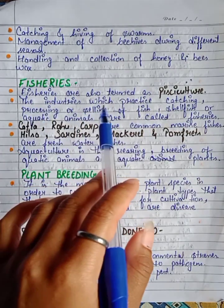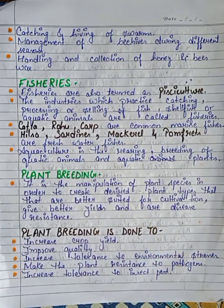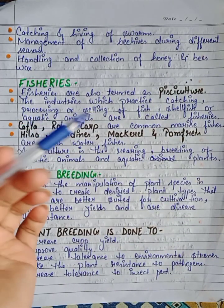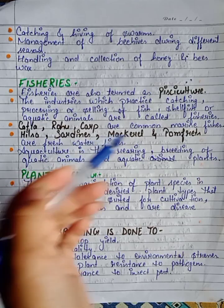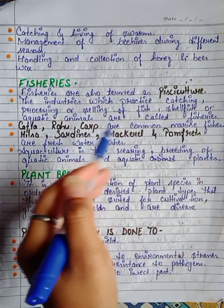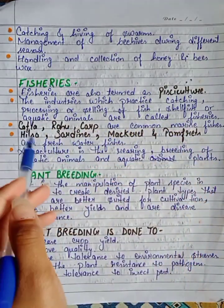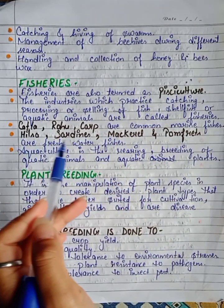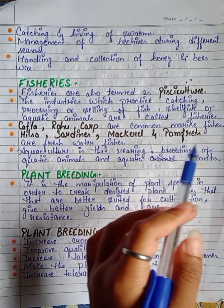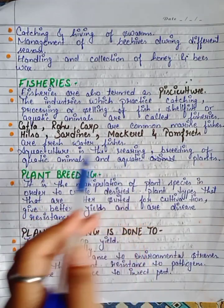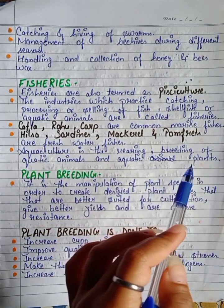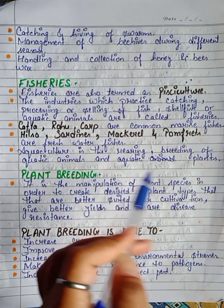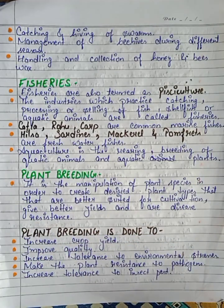Fisheries are also termed as fish culture. The industries which practice catching, processing, and selling of fish, shellfish, and aquatic animals are called fisheries. Catla, rohu, and carp are common freshwater fishes. Hilsa, sardines, mackerel, and pomfret are common marine fishes. Aquaculture is the rearing and breeding of aquatic animals and aquatic plants.